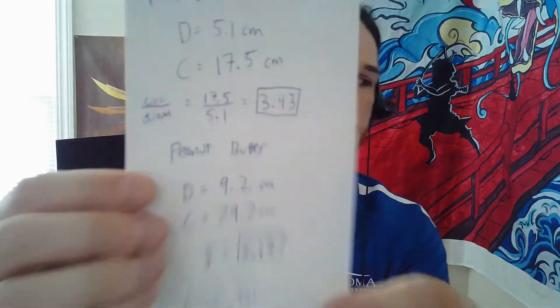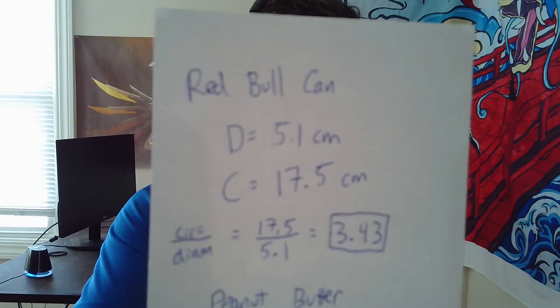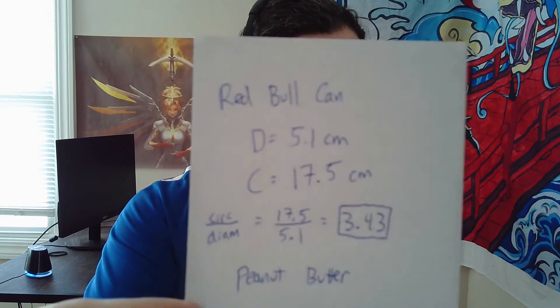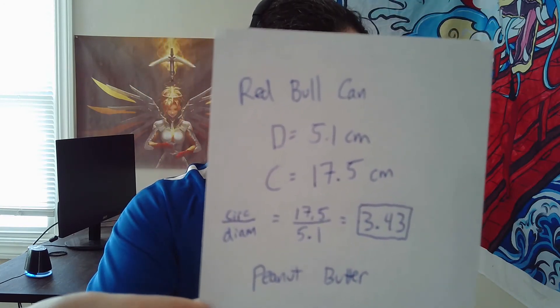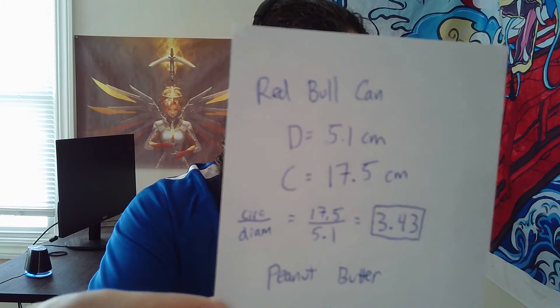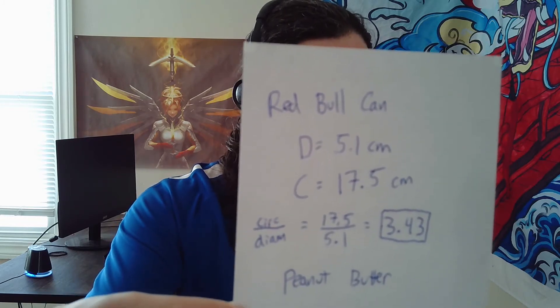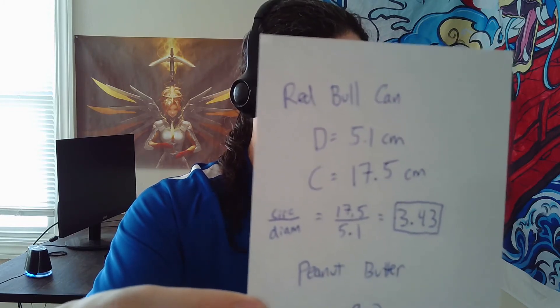So I went ahead and did the same process with this peanut butter jar and this mason jar. And here's my calculations. For the Red Bull can, as you can see, the diameter was 5.1 centimeters. The circumference was 17.5. When I divided the two, I got 3.43 as my ratio.